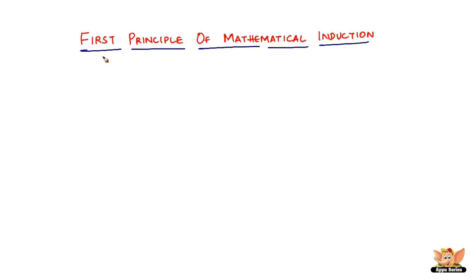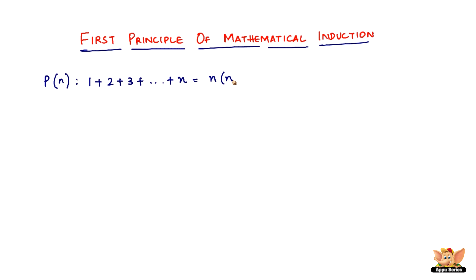In this video let us look into the first principle of mathematical induction with the help of an example. We have a statement P, where n belongs to natural numbers, which says 1 plus 2 plus 3 plus dot dot dot plus n equals n into n plus 1 by 2, where n is a natural number.